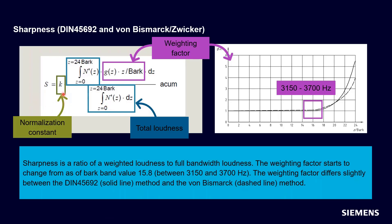This normalization constant here is just to make sure that when we have 50 dB at the one kilohertz sine wave, we end up with calculating one ACUM of sharpness. So that's what this K factor is. It's just to make sure that we get the definition of ACUM out of our calculation when we put that in. So it's the weighted loudness divided by the total loudness.